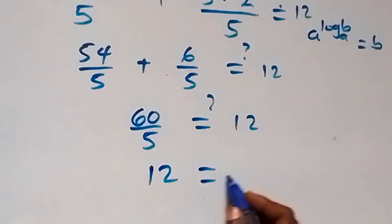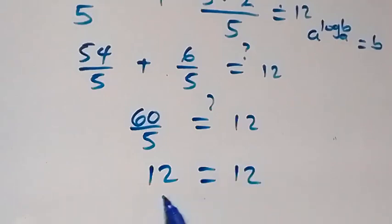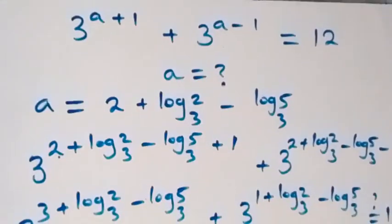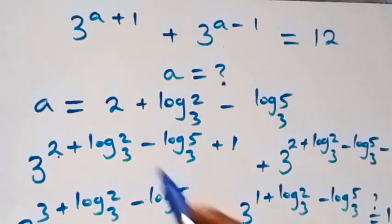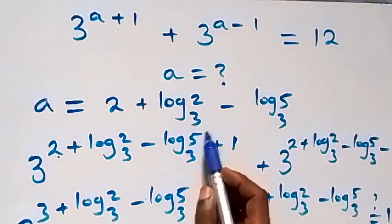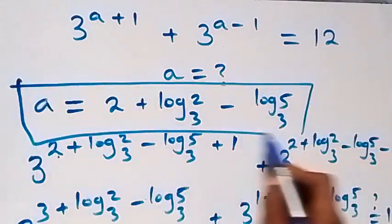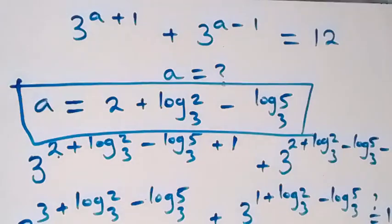60 over 5 equals 12, which equals 12 on the right-hand side. So left-hand side equals right-hand side. Hence we can conclude that a equals 2 plus log base 3 of 2 minus log base 3 of 5 satisfies the given problem. Thank you for watching — don't forget to subscribe for more videos, turn on your notification bell, share this video and give it a thumbs up. Put your comments in the comment section. See you next class, bye for now.